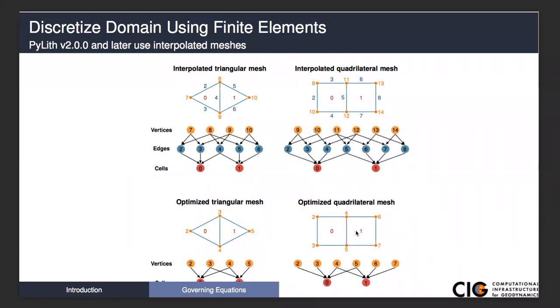PyLith discretizes the domain into finite elements. In 2D, these are triangles or quadrilaterals. In 3D, they are hexahedra or tetrahedra. You may be familiar with the general philosophy of finite elements where you take a triangle, you have nodes, you have edges. We take our entire domain, divide it up in a bunch of triangles, and each triangle has nodes, and we describe the variation of the displacement field within the cell to perform the numerical integration.